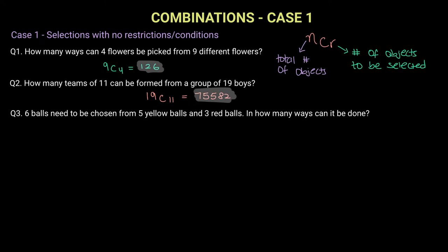In this question it says that we need to choose six balls from five yellow balls and three red balls. In how many ways can this be done? Since the question has not specified that these six balls have to have a certain number of yellow balls or a certain number of red balls, we can tell that this selection will have no restrictions and no conditions.